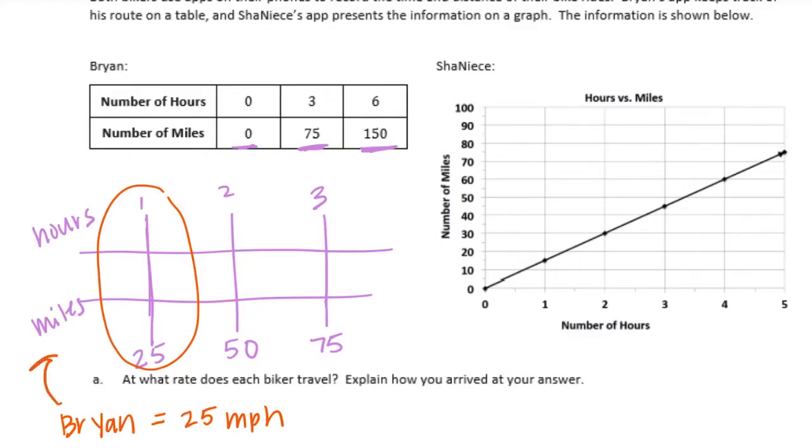And we can say, Brian equals 25 miles per hour. And it says explain how you know. So I'm just going to draw an arrow to how I arrived at my answer. But on the double line graph, you could explain what we did. So the double line graph, we split it into 3 equal parts and found out how much each part was worth.